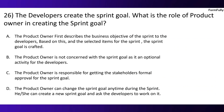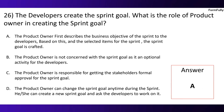Question 26. The developers create the sprint goal. What is the role of the product owner in creating the sprint goal? Option A: The product owner first describes the business objective of the sprint to the developers; based on this and the selected items for the sprint, the sprint goal is crafted. Option B: The product owner is not concerned with the sprint goal as it is an optional activity for the developers. Option C: The product owner is responsible for getting the stakeholders' formal approval for the sprint goal. Option D: The product owner can change the sprint goal anytime during the sprint and ask the developers to work on it. The correct option is A.